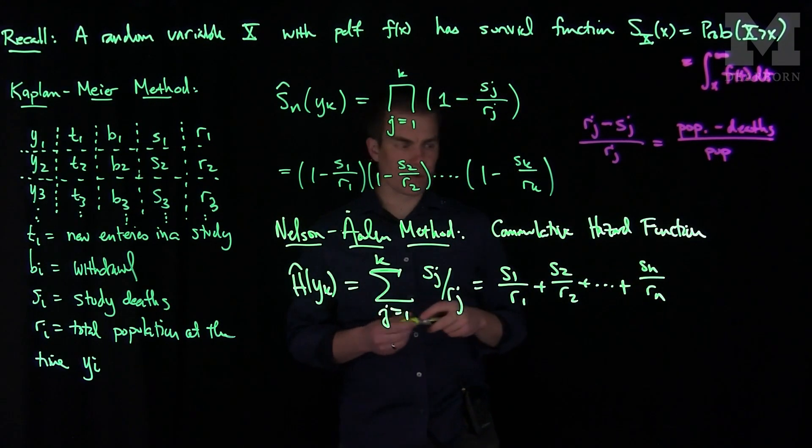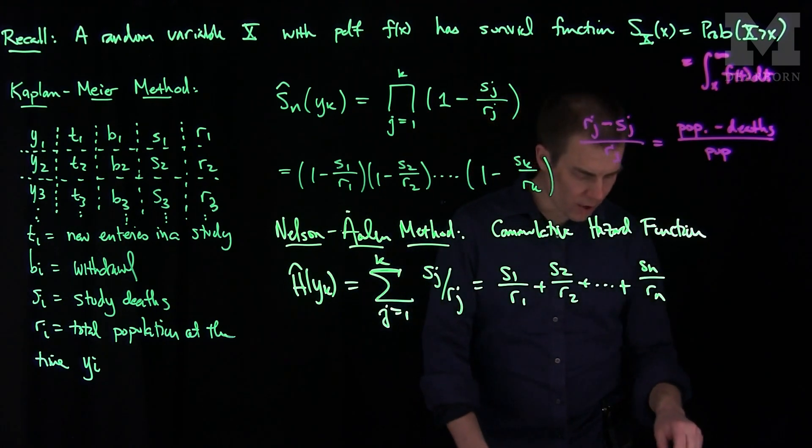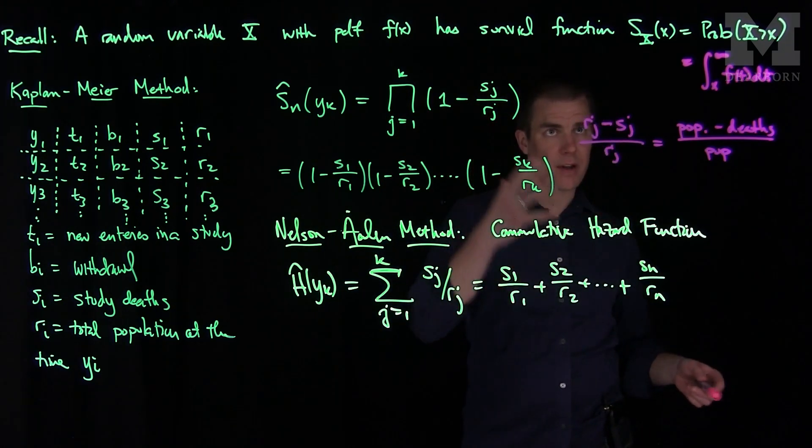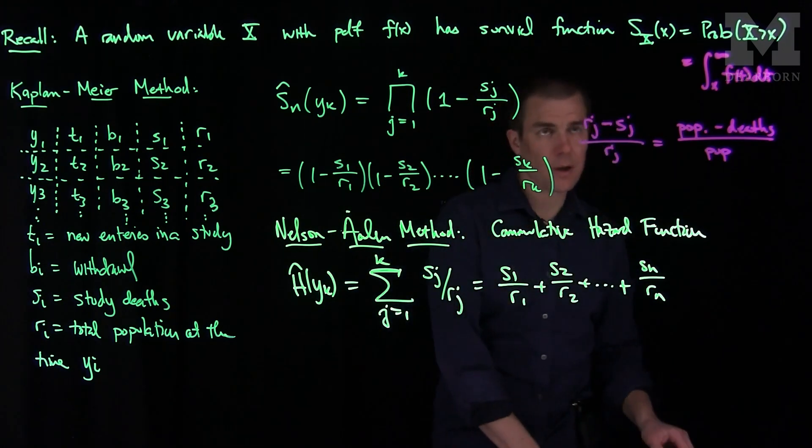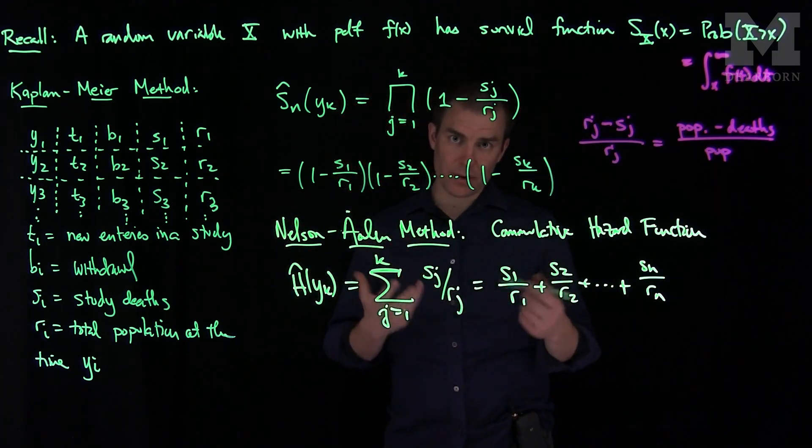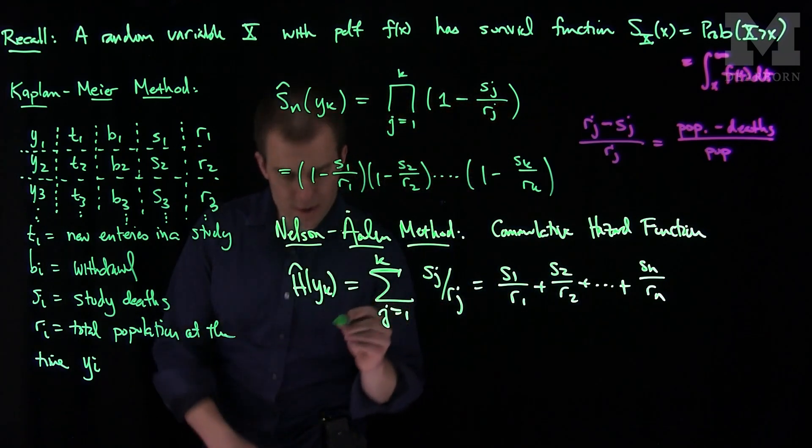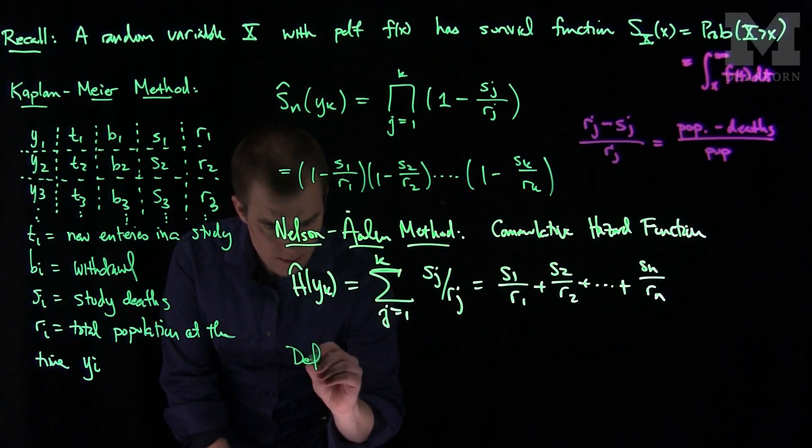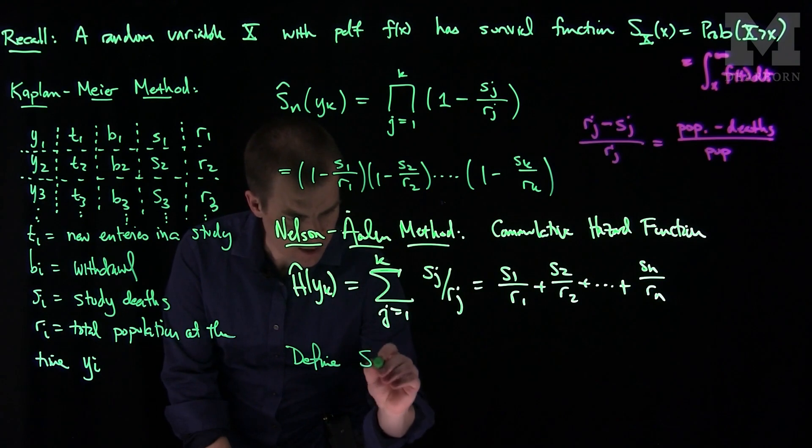And once we have the estimate for the cumulative hazard function, we recall the relationship between the survival function and the hazard function from classical probability, namely the negative exponential of the integral of the discrete hazard function, or the cumulative hazard function, is the survival function. So we can set, or define in this method...